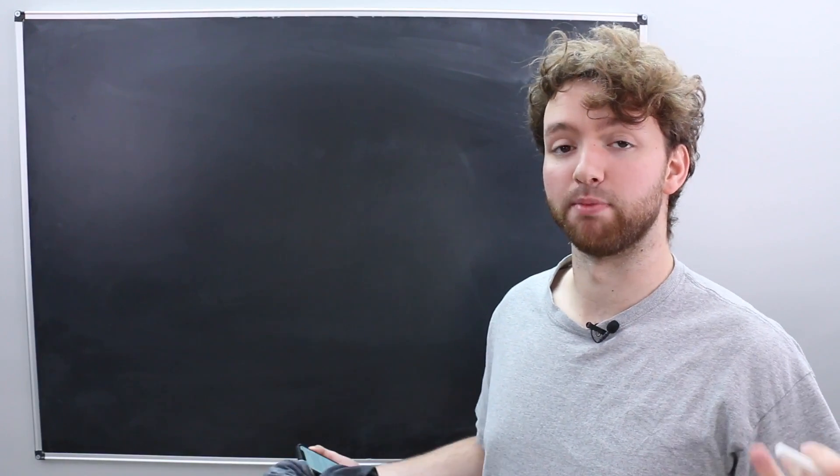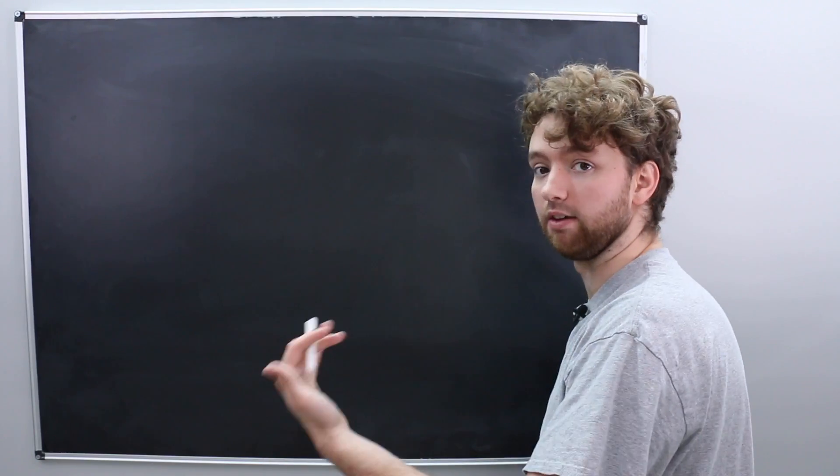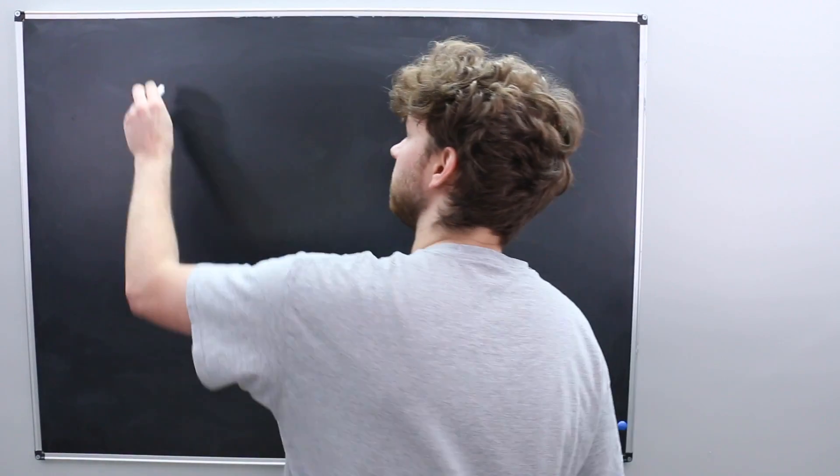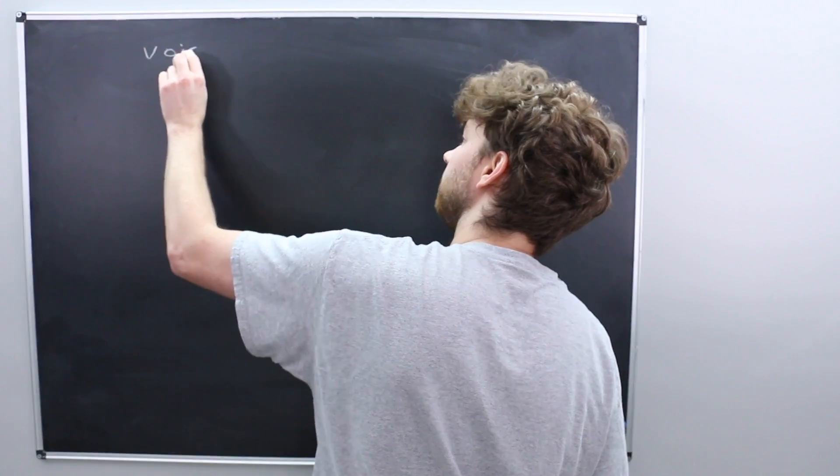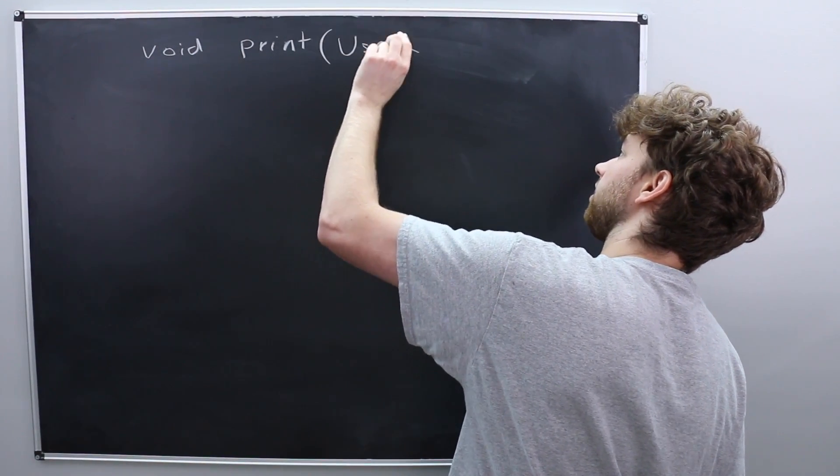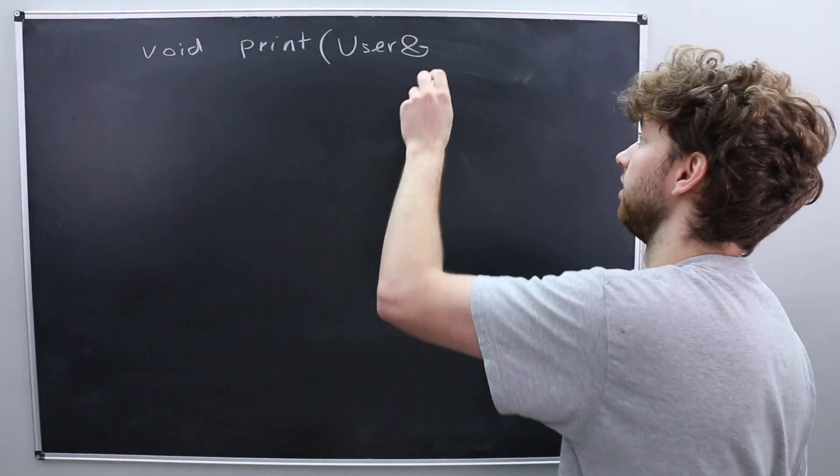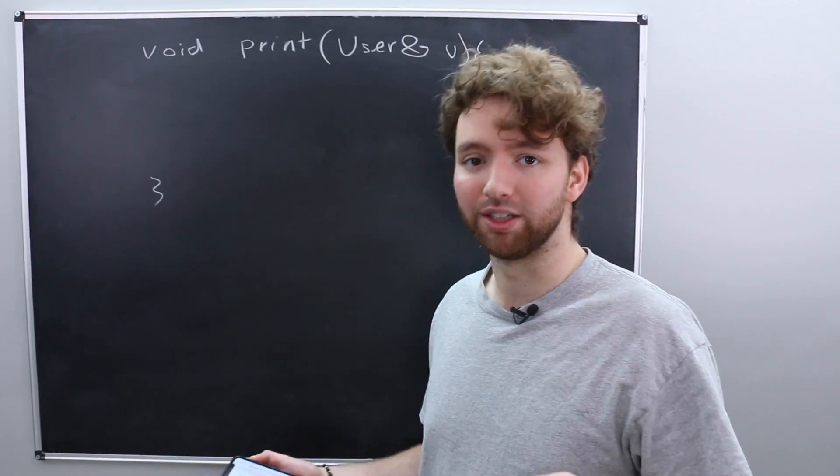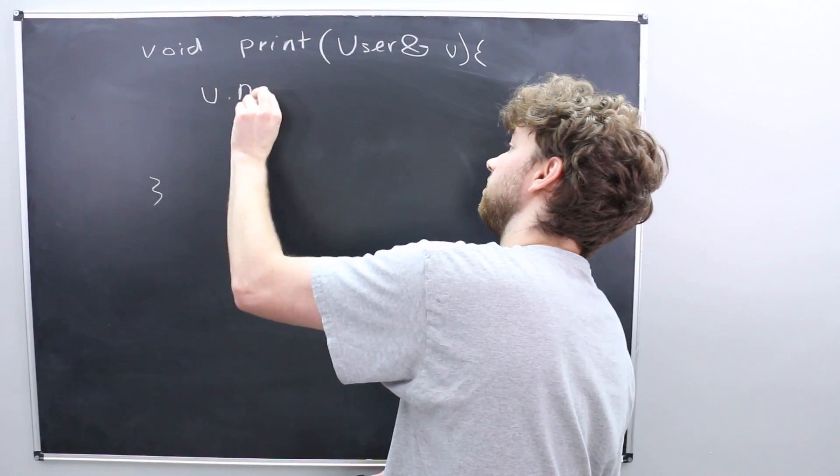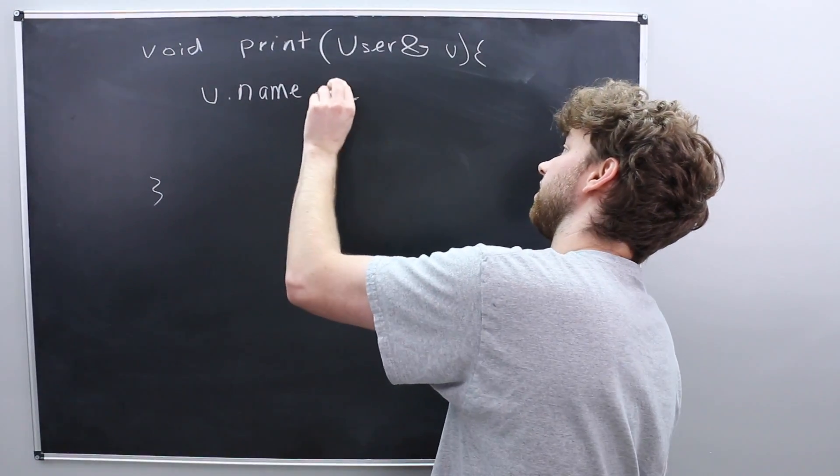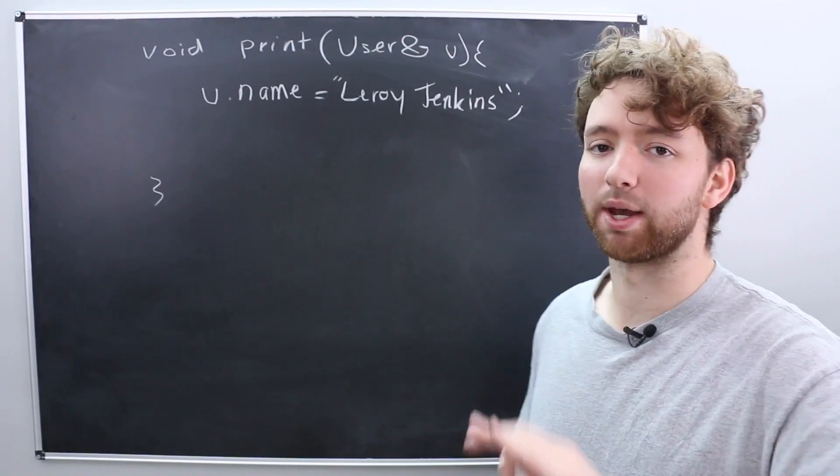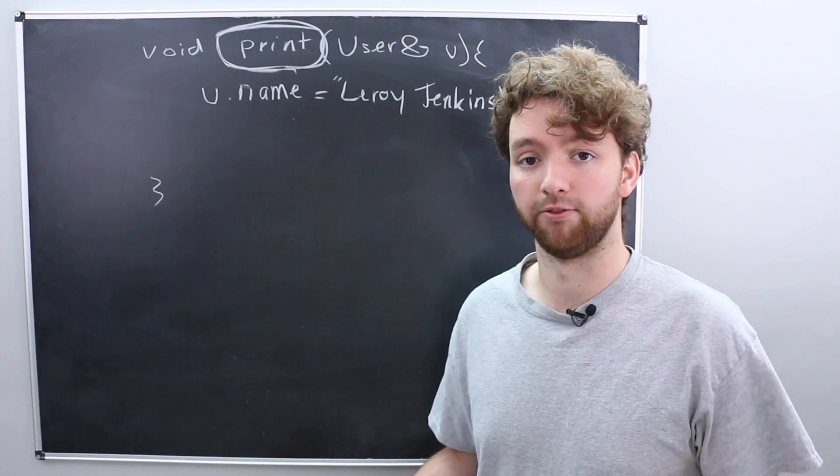So I want to go over a simple example where this might be a bad thing. Let's say we are working with a function to print out user information for our application into the console. So the function might look like this void and we can just call it print. And this takes a user object but it's a reference here. Inside of here we expect it to do some outputs but little do we know it's actually modifying the data. So it might do something like u.name and assign it a new name. And that's bad because from the calling side you wouldn't expect this at all based on the name of the function.